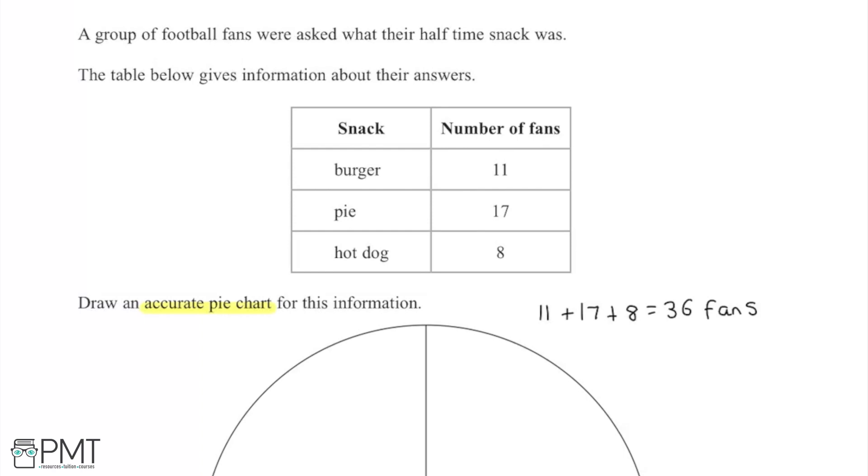Now this is going to be quite useful because if we have 36 in total it's going to be a number out of 36 and if we multiply this by 10 over 10 we're going to have a number over 360 which is the number of degrees in a circle. So the numerator of this fraction is going to be the number of degrees that is represented by this snack so we can draw this angle in.